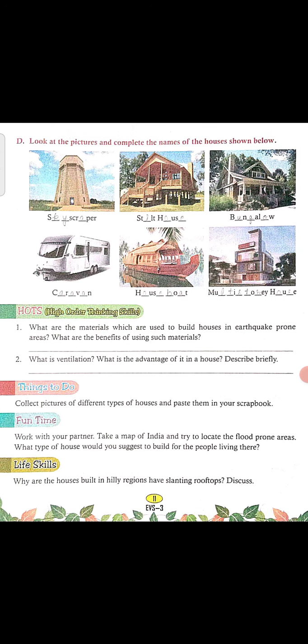Look at the pictures and complete the name of the houses shown below. First is skyscraper — S-K-Y-S-C-R-A-P-E-R. Second is stilt house — S-T-I-L-T-H-O-U-S-E. Third is bungalow — B-U-N-G-A-L-O-W. Fourth is caravan — C-A-R-A-V-A-N. Fifth is houseboat — H-O-U-S-E-B-O-A-T. Sixth is multi-storey house — M-U-L-T-I-S-T-O-R-E-Y-H-O-U-S-E.